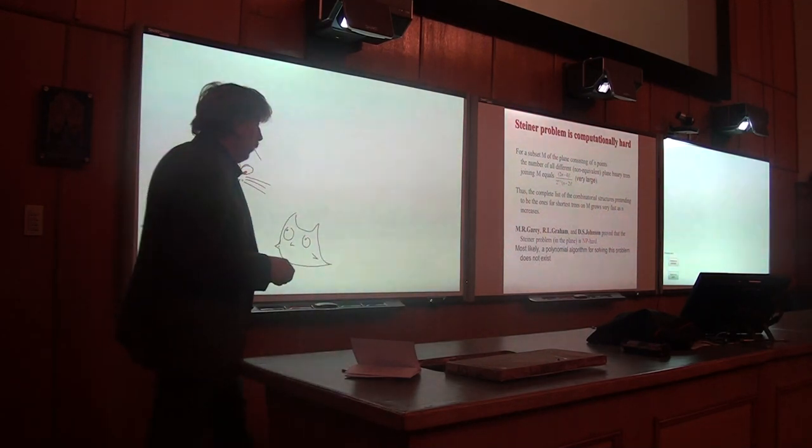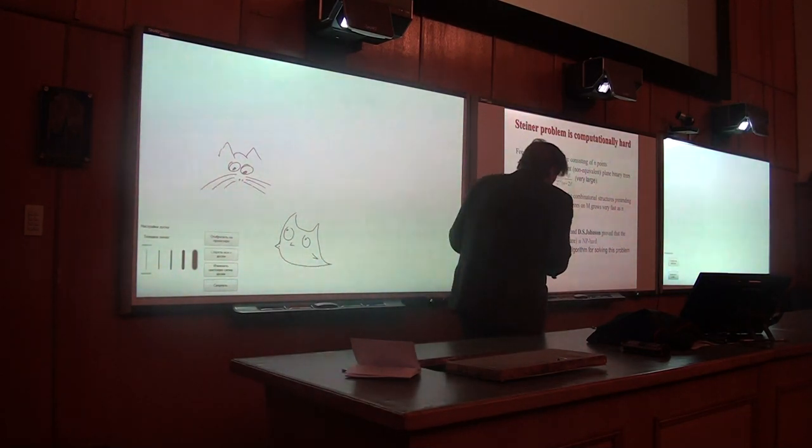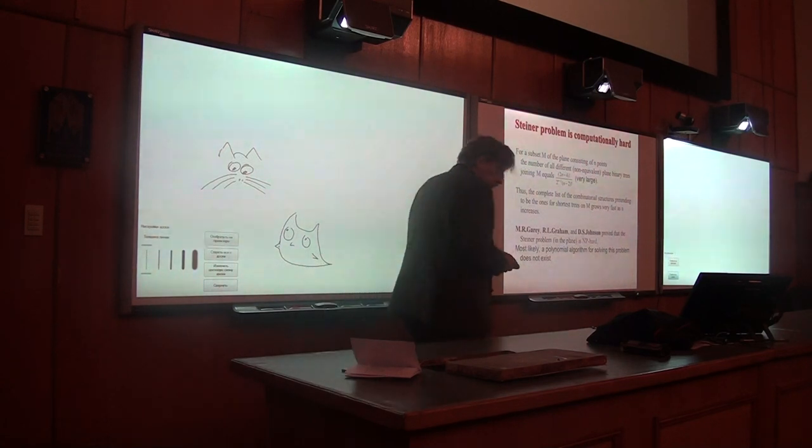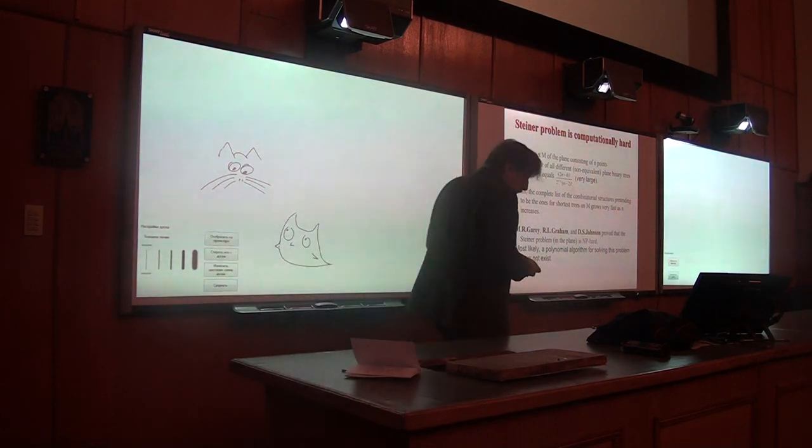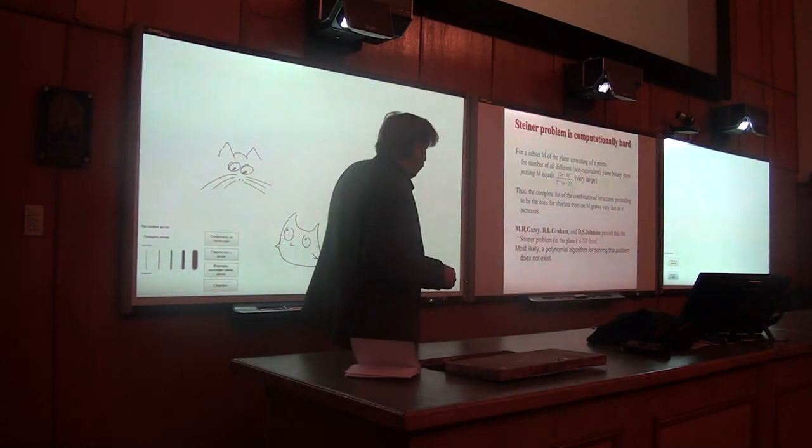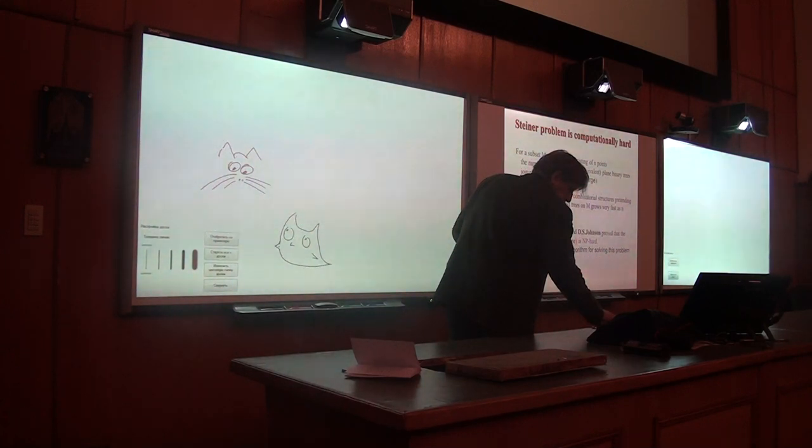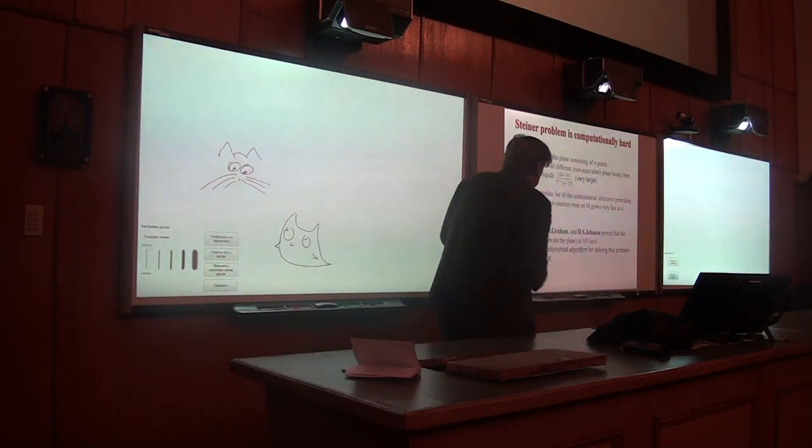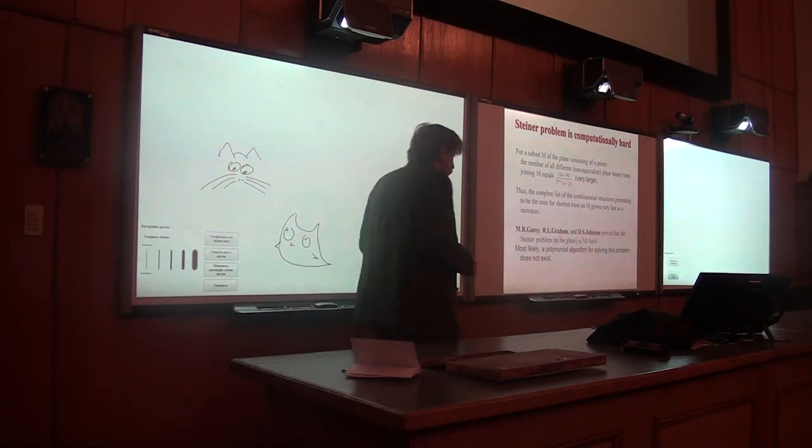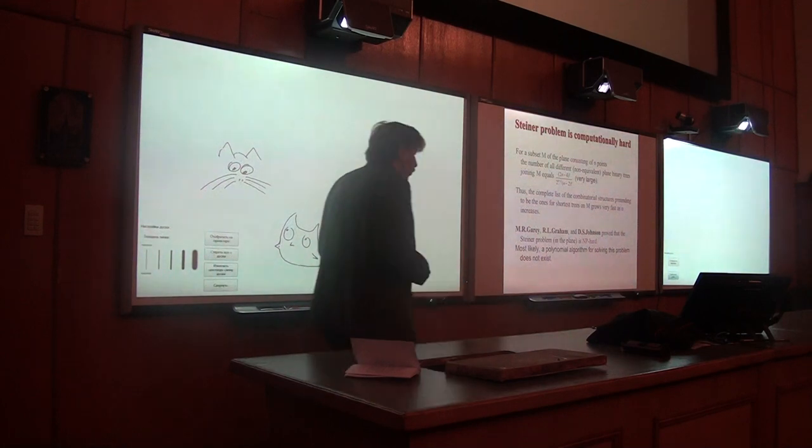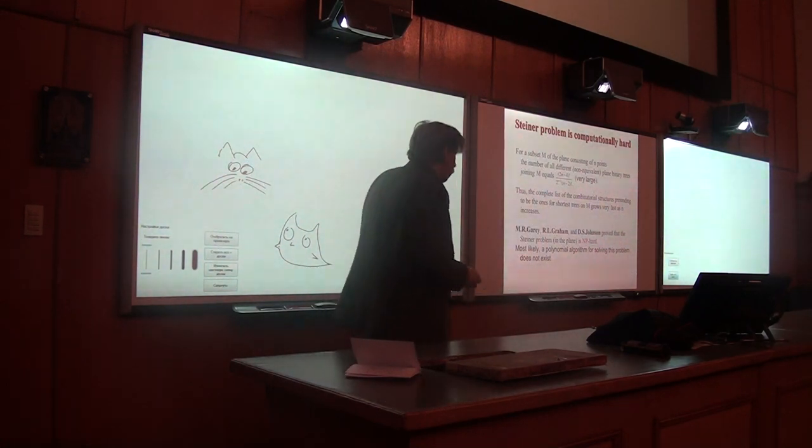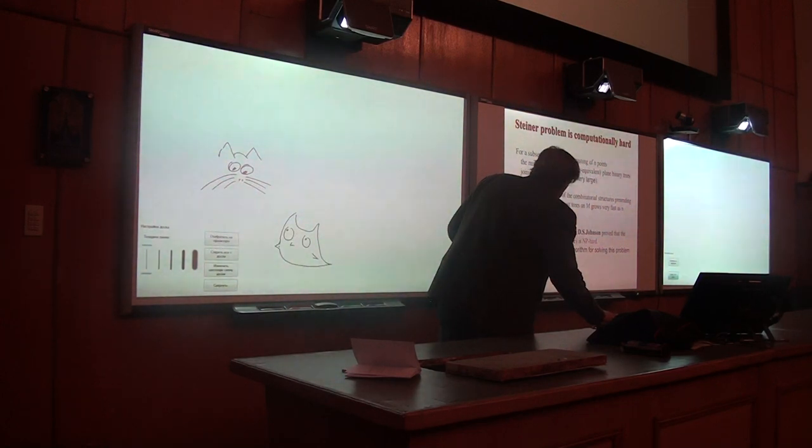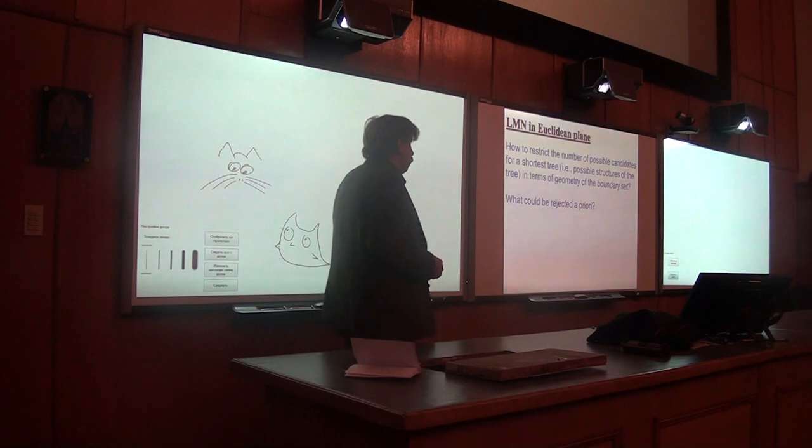This slide says that the problem is computationally very hard. The problem is that there are a lot of possibilities to connect boundary vertices with additional vertices. Even if we don't permit vertices of degree two, we already have a lot of possibilities. We have a lot of combinatorial possibilities, combinatorial explosion. In the seventies it was proven that most likely no polynomial algorithm exists to construct the shortest tree for a given set of points. Due to this hardness of the problem, it is interesting to find out some geometrical methods which can improve the algorithm.